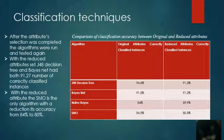Classification. So the original attributes correctly classified instances: J48 was 94%, which reduced to 91%. BayesNet was 91%, stayed the same at 91%. Naive Bayes was 84% and increased to 89%, and SMO was 84% and reduced to 80%.